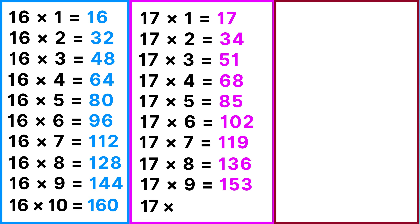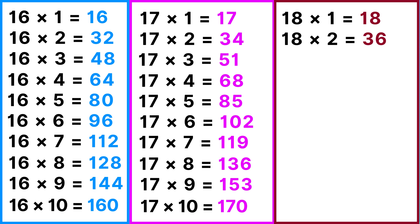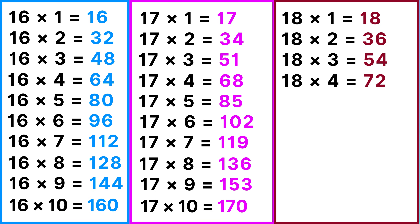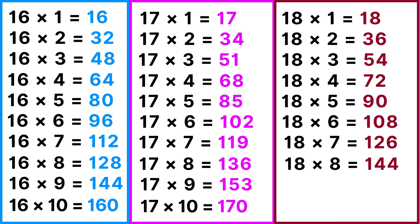17 tens are 170. Table of 18: 18 ones are 18, 18 twos are 36, 18 threes are 54, 18 fours are 72, 18 fives are 90, 18 sixes are 108, 18 sevens are 126, 18 eights are 144, 18 nines are 162.